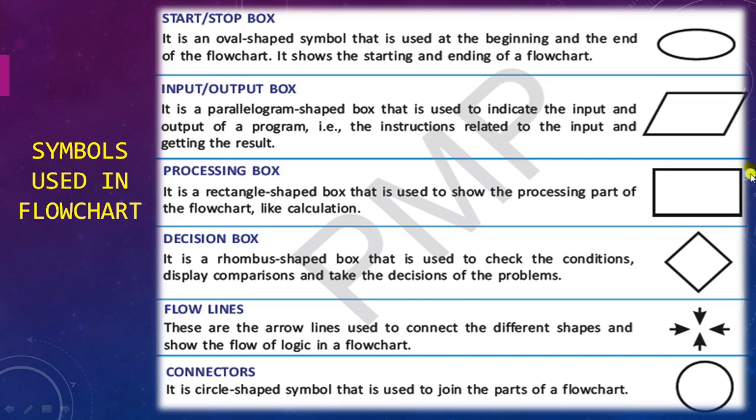For processing box we use a rectangle. For decision box, when a condition arises, we use a rhombus-shaped box. The flow lines go from top to bottom, shown through arrows. The connector is used to join the parts of a flowchart. If you're creating a long program, the flowchart might become very complex, so to add two or three flowcharts at once we use connectors.